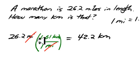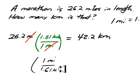How did we know not to write 1 mile over 1.61 kilometers? Because after all, that is also equal to 1. But if we had done that, the miles would not cancel properly. You'd have miles times miles divided by kilometers, and that just really doesn't make any sense.